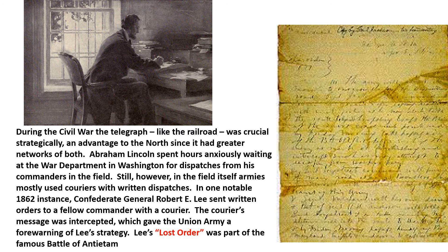During the Civil War, the telegraph, like the railroad, was crucial strategically and advantaged the North since it had greater networks of both. Abraham Lincoln often spent hours anxiously waiting at the War Department in Washington for dispatches from his commanders in the field. Still, in the field itself, armies mostly used couriers with written dispatches. In one notable 1862 instance, Confederate General Robert E. Lee sent written orders to a fellow commander with a courier. The courier's message was intercepted, which gave the Union Army forewarning of Lee's strategy. This — Lee's lost order — was part of the famous Battle of Antietam.